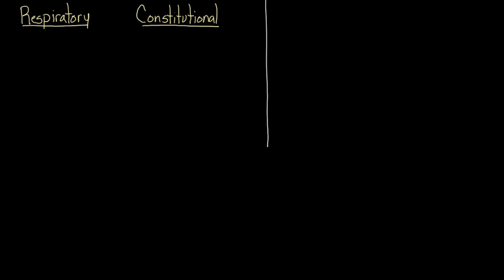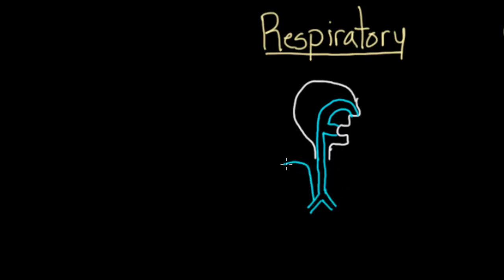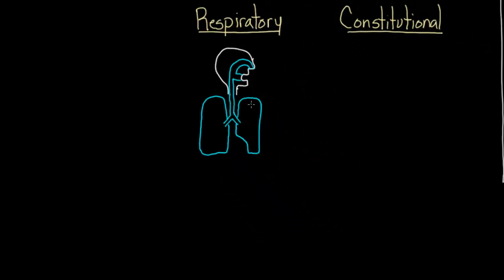So respiratory symptoms, let me draw out air coming into the body. Remember, air has two major paths into your body. It's going to come in through your nose, or it's going to come in through your mouth. And when it comes in, it's going to quickly join up. Air in the nose is going to meet up with air in the mouth, and it's going to go down through the windpipe, or the trachea we call it. And it's going to branch off into the right and left lung. So this is my right lung over here, and on the other side we've got the left lung.